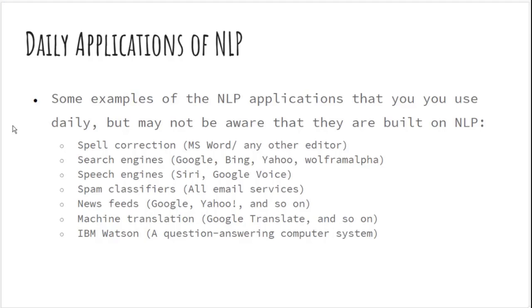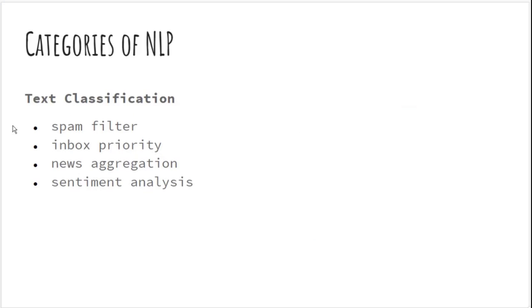IBM Watson, which is a question answering system, is another example of NLP in daily use. If we want to categorize NLP applications, one category is text classification, in which you classify text into groups — for example, a spam filter asks: is this email spam or not?